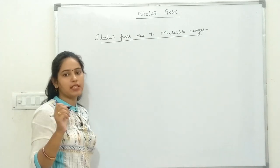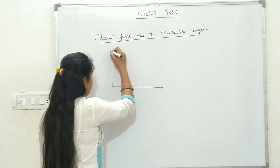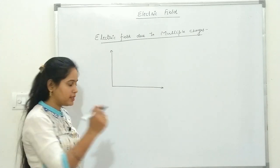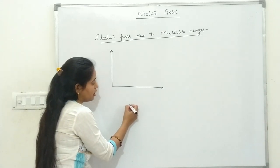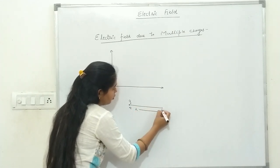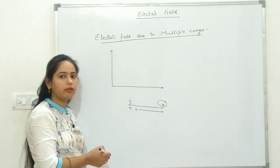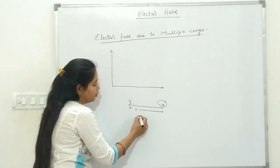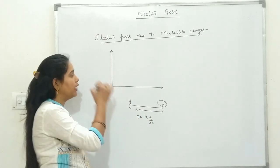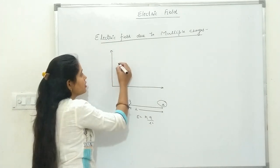Electric field due to multiple charges — last lecture mein aapne padha tha ek single point charge ke electric field ke baare mein. Ek single point charge Q rakha hua hai, aur isse kisi point A par electric field find karna hai, toh E is equal to kQ by r square.